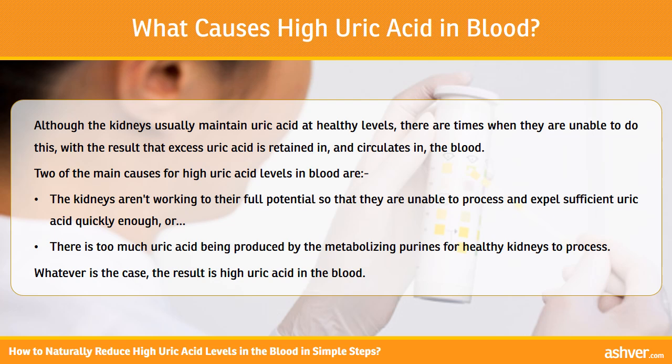Two of the main causes for high uric acid levels in the blood are: 1. The kidneys aren't working to their full potential, so they are unable to process and expel sufficient uric acid quickly enough, or 2. There is too much uric acid being produced by the metabolizing purines for healthy kidneys to process.